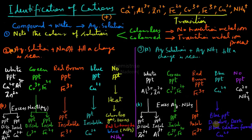So this is all about the identification of cations. There are three tests that we have performed. You need to memorize these colors and all these precipitates, and I hope you will be able to solve exam questions based on this. We will keep learning exciting concepts of chemistry in our videos. Till then, goodbye!